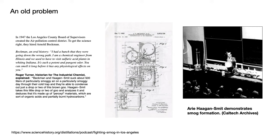In 1947, the Los Angeles County Board of Supervisors created the Air Pollution Control District to address a growing environmental crisis around air quality. They hired Arnold Beckman. At the time, sulfur chemistry was promoted as the culprit, but Beckman had a hunch that they were going down the wrong path.